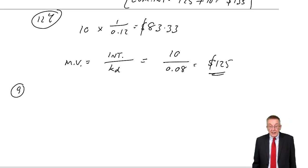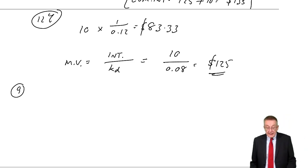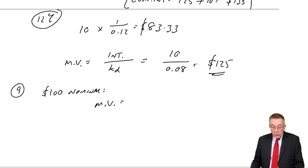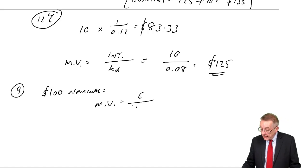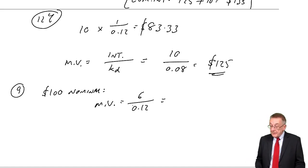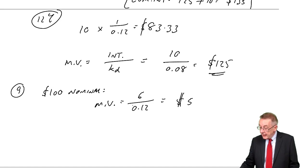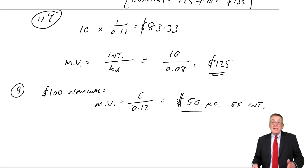There is another example — example 9. The company has in issue a million 6% debentures, the required return is 12%. For $100 nominal, the market value is the coupon rate — $6 a year — divided by the required return KD of 12%. That gives a market value of $50 for every $100 nominal.